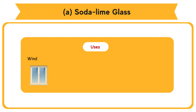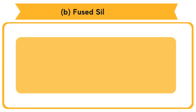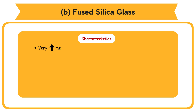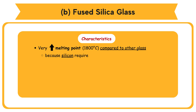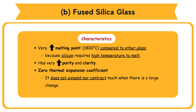Uses of soda lime glass: Window panes, light bulbs, bottles, and glass containers. Fused silica glass Composition: Silica SiO2 - 99.9%, without adding any other chemical. Characteristics: Very high melting point of 1800°C compared to other glass, because silicon requires high temperature to melt. Has very high purity and clarity. Zero thermal expansion coefficient — it does not expand nor contract much when there is a large change in temperature, so it is resistant to thermal shock.